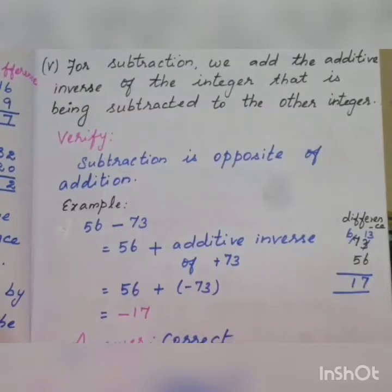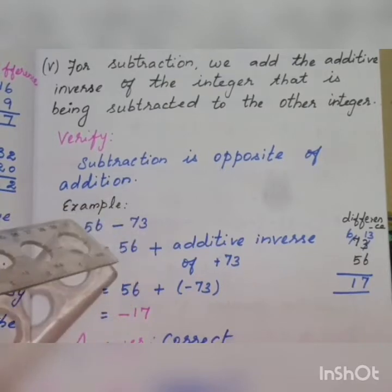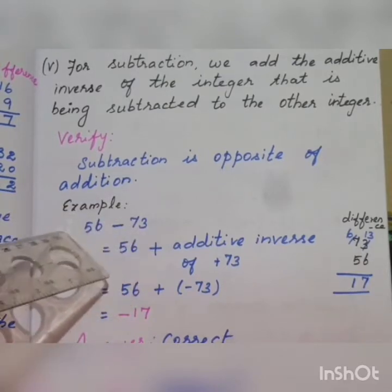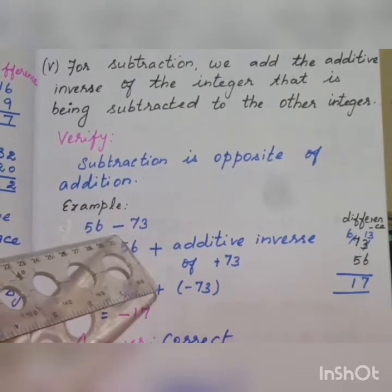Fifth statement. For subtraction, we add the additive inverse of the integer that is being subtracted to the other integer. When we subtract two numbers, the subtraction sign is opposite of addition. For example, 56 minus 73.